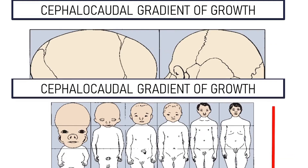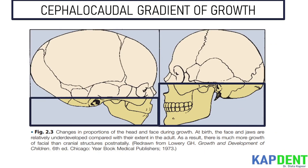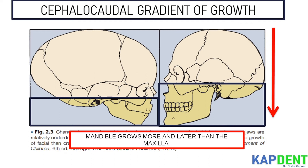Even within the head and face, the cephalocaudal growth gradient strongly affects the proportions. When the skull of a newborn infant is compared proportionally with that of an adult, it is easy to see that the infant has a relatively much larger cranium and a much smaller face. When the facial growth pattern is viewed against the perspective of the cephalocaudal gradient, it is seen that the mandible, being farther away from the brain, tends to grow more and later than the maxilla, which is closer.